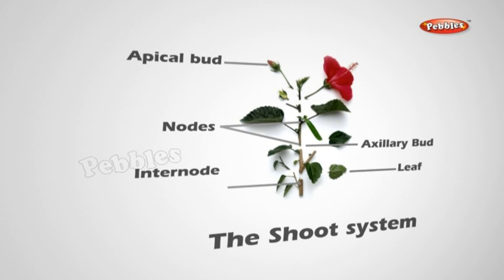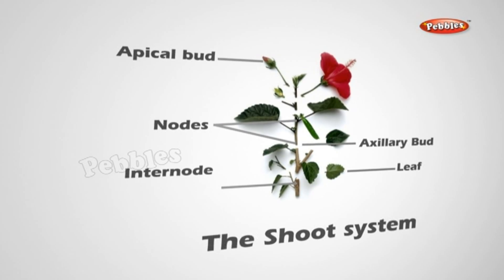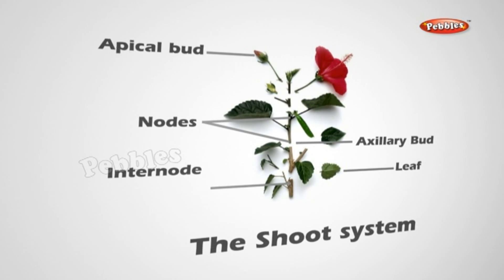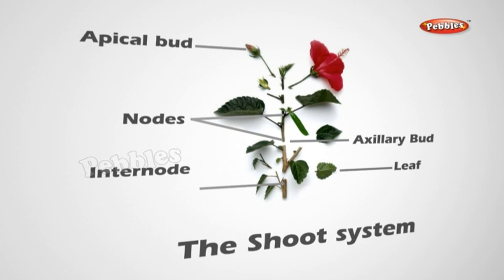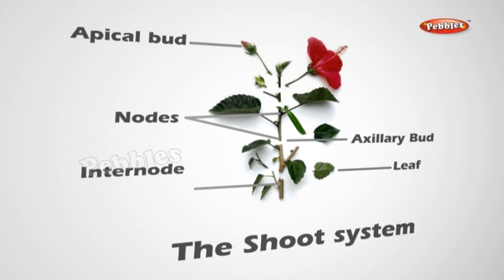Observe the shoot system of a plant. The main axis of the shoot system on which all parts such as leaves, flowers, buds, and fruits are borne is called the stem. The points from where the leaves arise are known as nodes. The portion of the stem between two nodes is called an internode. At the tip of the plant you will notice a bud called the apical bud; the plant grows in height due to growth in this bud region. The leaves make an angle with the stem called the axil. Buds known as axillary buds are present in the axils and give rise to the many branches of a plant.